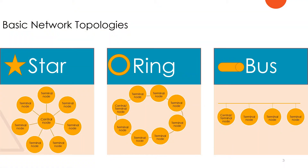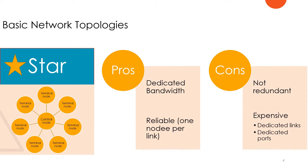If we look at the pros and cons of these different networks, in a star the advantages are: we have dedicated bandwidth for each terminal, and it is reliable because if one link fails it will only affect a single node.